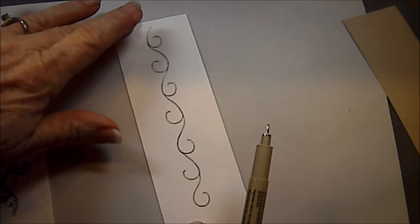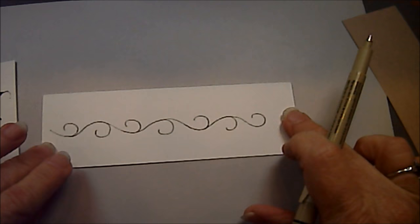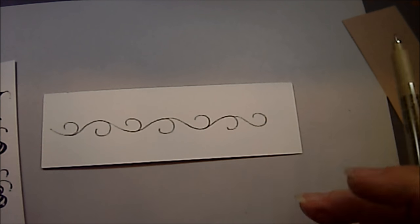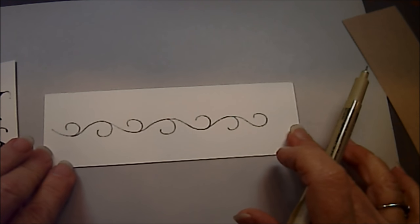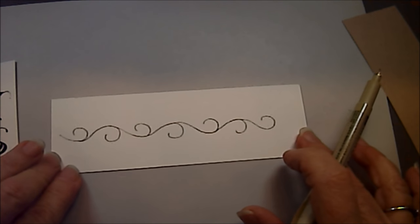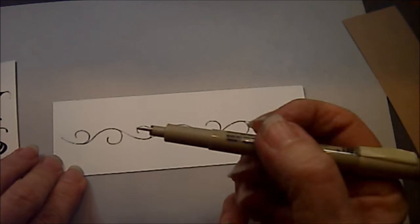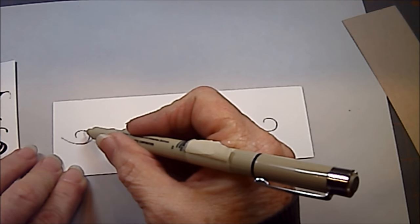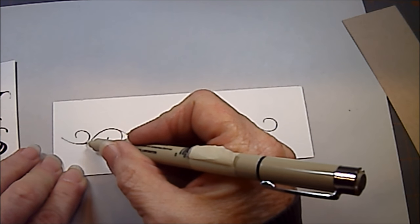Then I'm going to turn my bookmark, whatever I'm working on, my tile, I'm going to turn it so that it's going horizontally. And now I'm going to draw, look at this area where you have a little V.